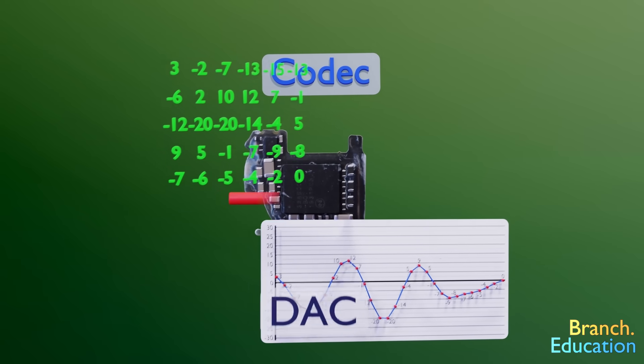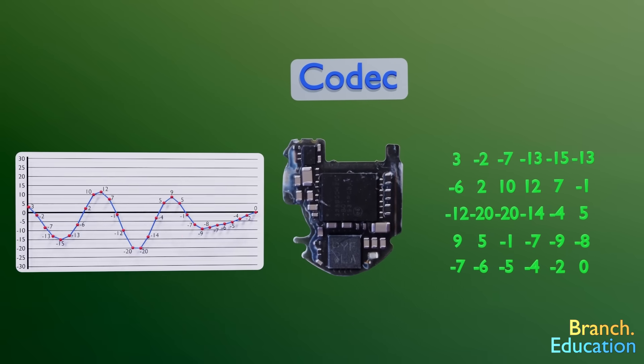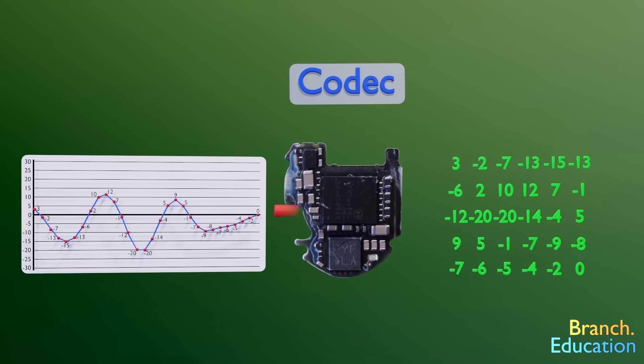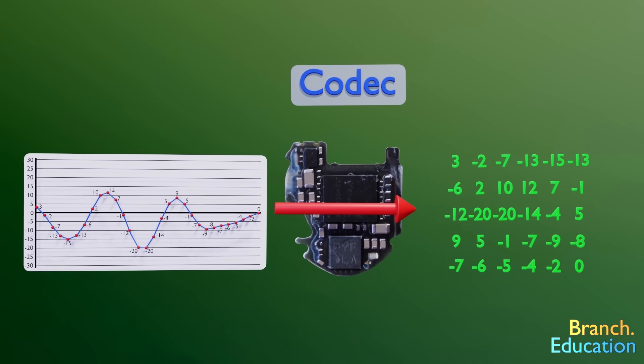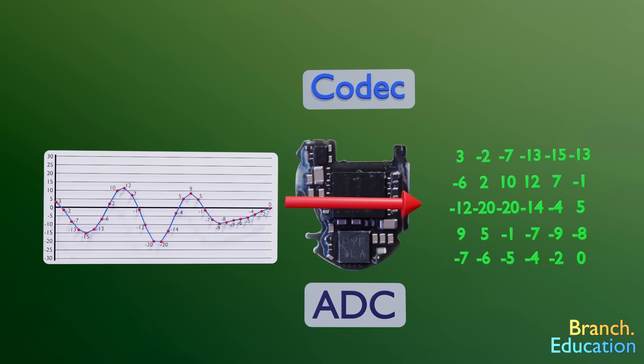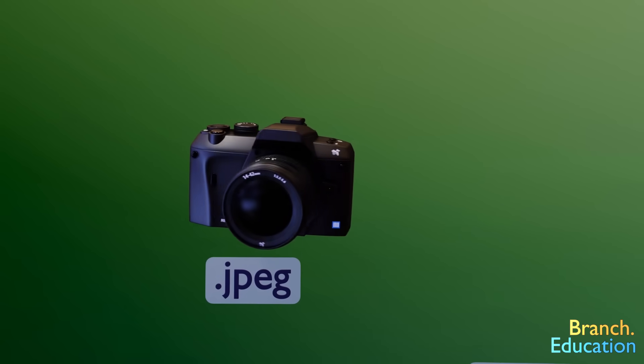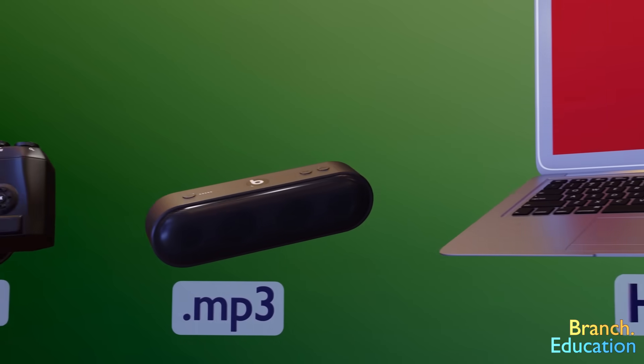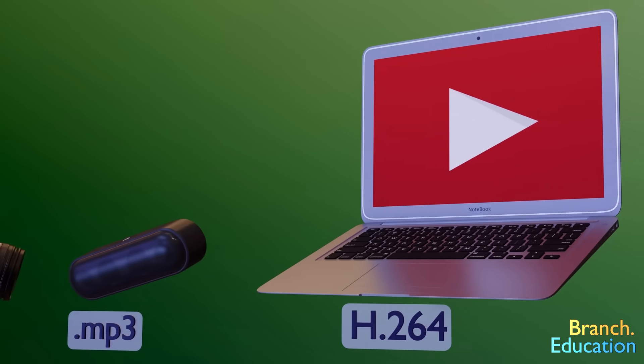However, audio codecs can also do the reverse by encoding the analog signal from the microphone into a digital set of values, which is an analog-to-digital conversion, or ADC. Codecs are used in every piece of technology we use in order to convert certain types of data into other types while compressing or decompressing the data.